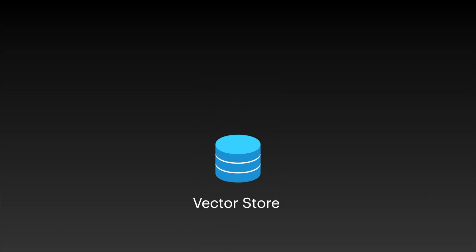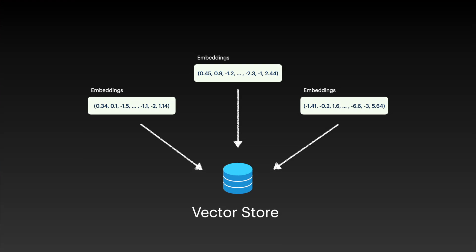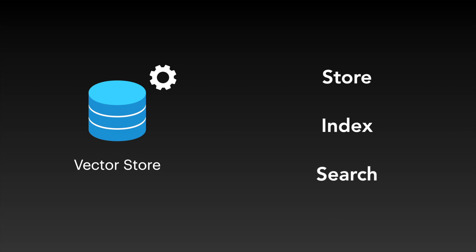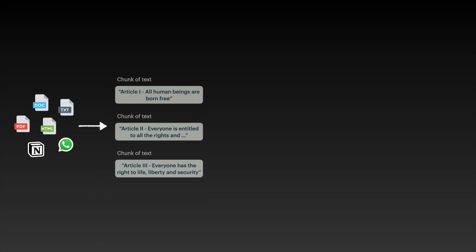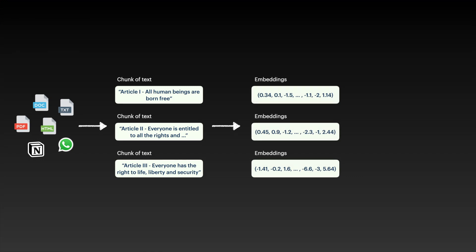Once we have transformed our chunks of text into embeddings, we need to store them, and we're going to use a vector store for that. Vector stores are a place where all the embeddings are stored. As there are thousands of dimensions per embedding, every vector store will have its own algorithms to store, index, and search through them. As a summary: all documents we want to add to our personal assistant will be divided into chunks of text, then we use an embedding model to create embeddings and store them in a vector store.